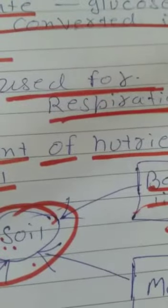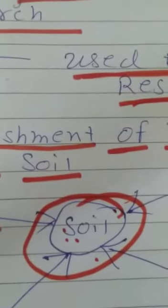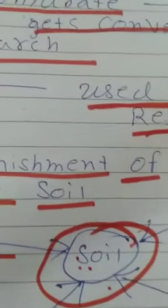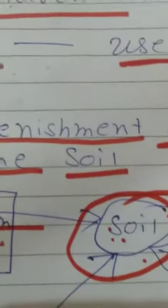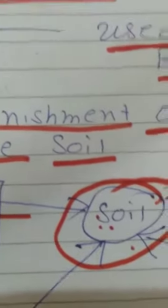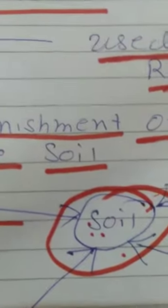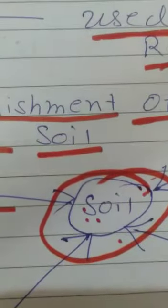They trap the atmospheric nitrogen into the nodules and convert it into the nitrate or nitrite form and fix it into the soil. From the soil, the plants take the nitrate or nitrite which helps supply it to other parts of the plant in the form of nutrition. Because nitrogen is very important for the development of the plant.